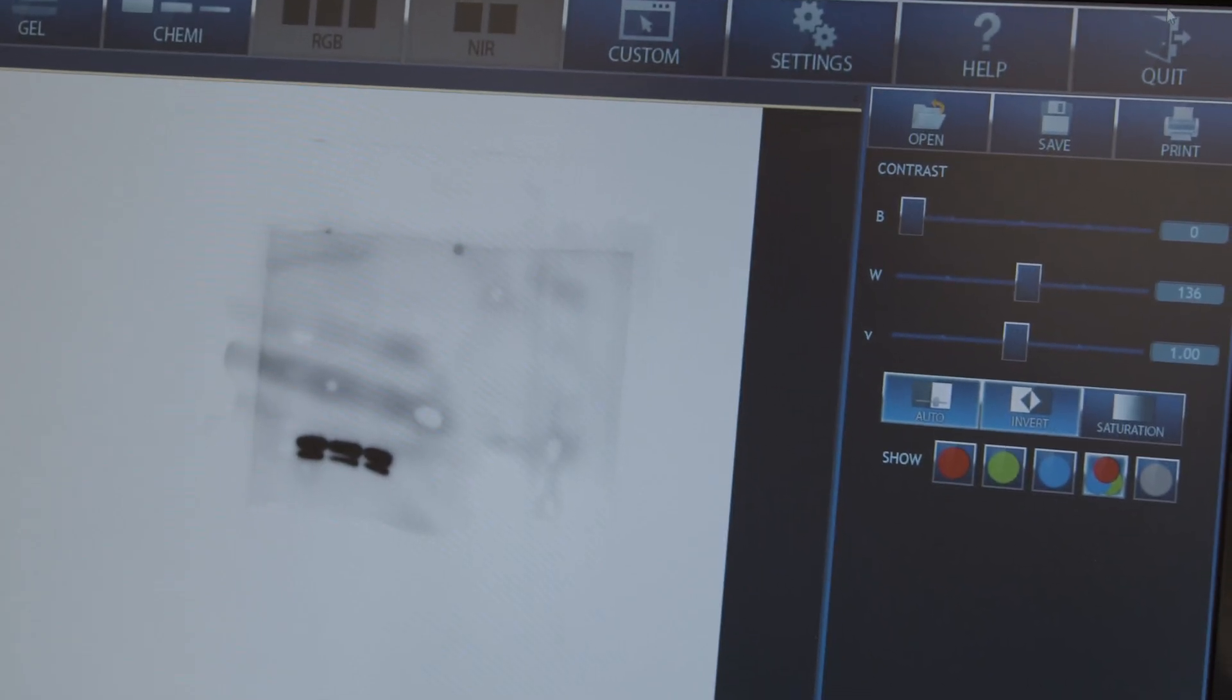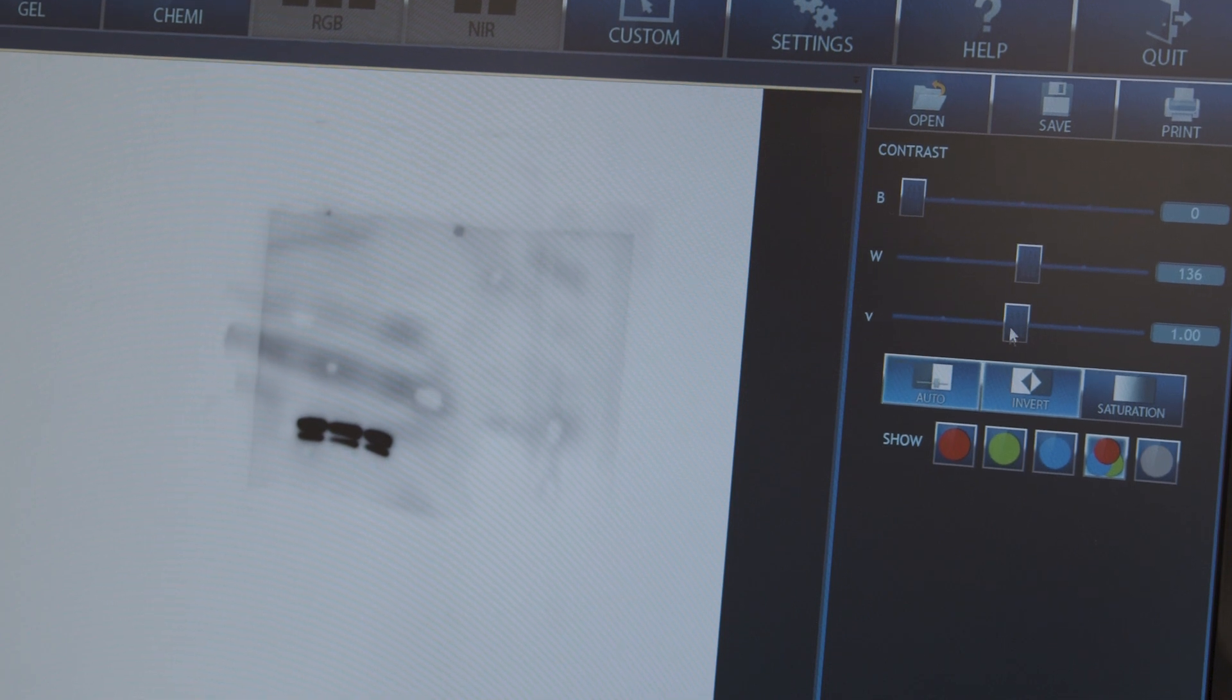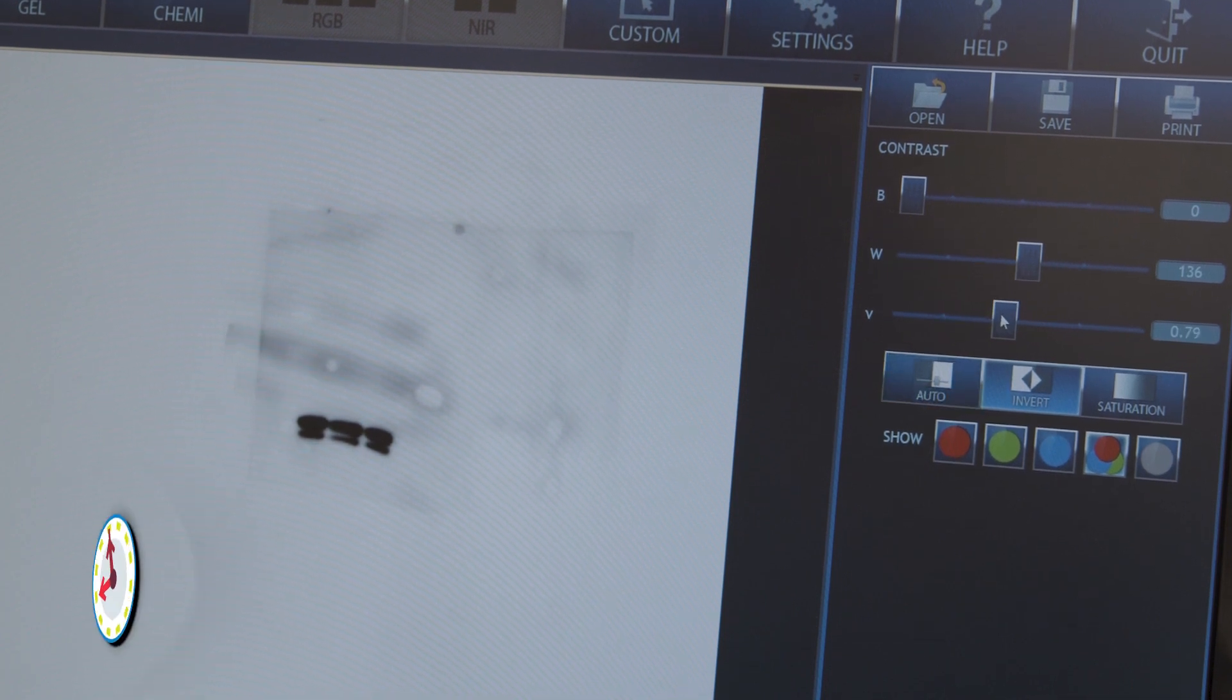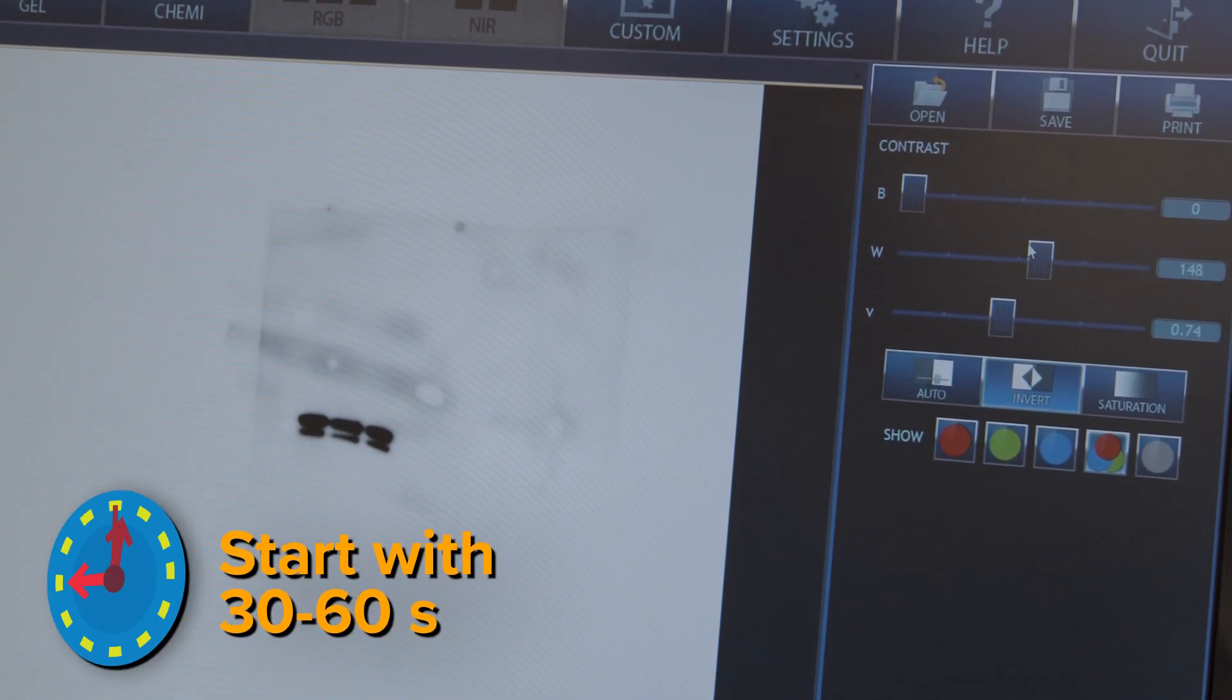Use a gel imager with chemiluminescent capabilities or x-ray film in a dark room for detection. The ideal exposure time will vary depending on a variety of factors, such as protein abundance and antibody signal strength. Start with a short exposure time of 30 to 60 seconds and optimize from there to get the ideal image.